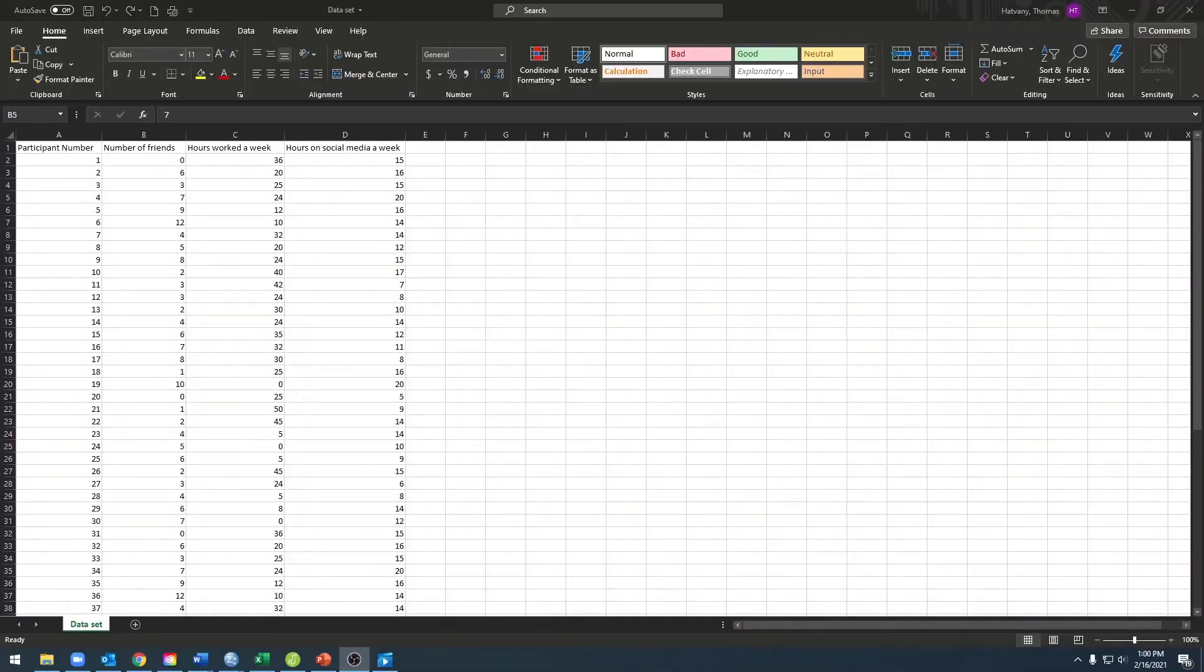Now that we have our research question, it's time to enter our data into a spreadsheet. Here I have all of my variables, and the data listed in each column. I've also added another variable called participant number, and this will help us keep our data organized.